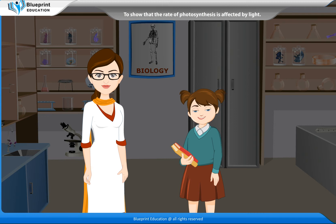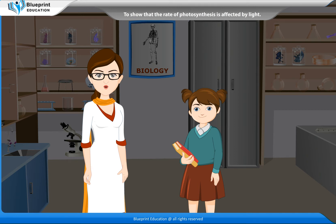Madam, why is sunlight important in photosynthesis? In the absence of sunlight, the process of photosynthesis cannot take place and hence starch is not produced by chlorophyll. Let's perform an experiment to show that the rate of photosynthesis is affected by light.